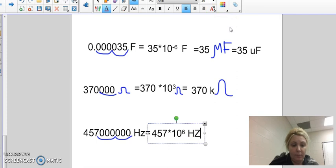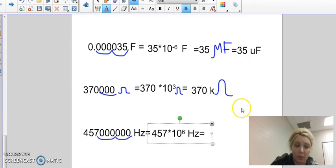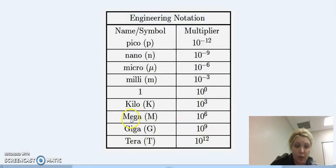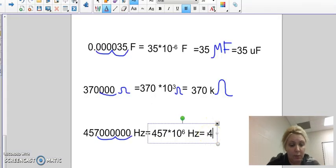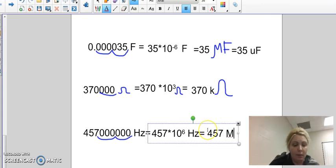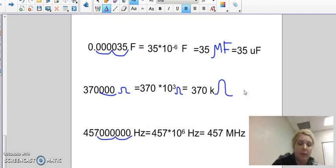I look at what 10 to the 6 is on my chart, and this one says mega. So I'm going to type in 457 megahertz. One thing I want you to keep in mind is that your unit itself—if it's capitalized, keep it capitalized. If you don't, it will be wrong. For example, Hertz is Hz: capital H, lowercase z. They both have to be exactly the same way I show them on your assignment.